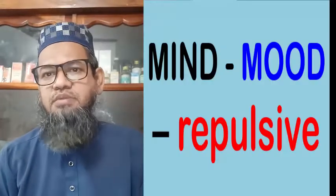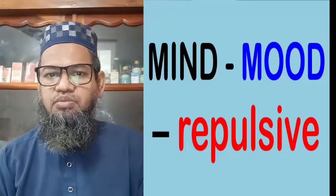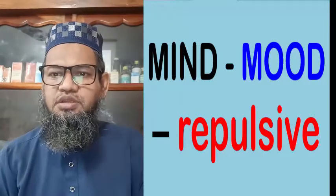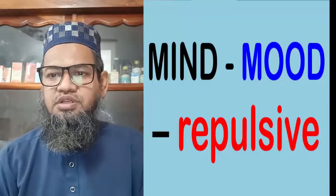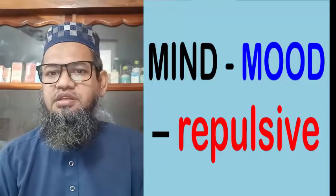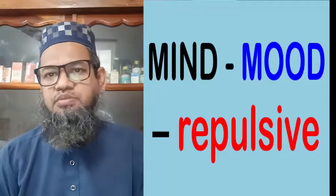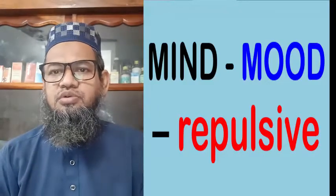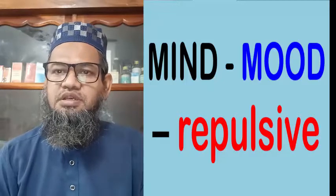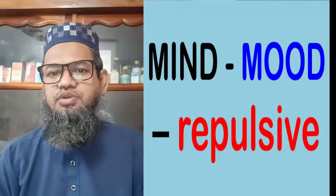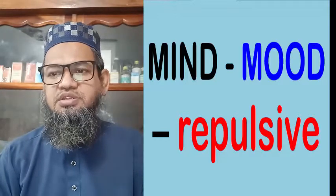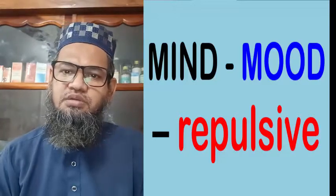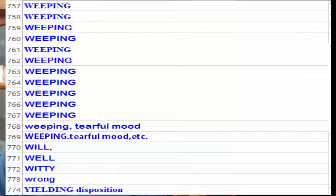Viewers, remember the rubric 'Mood Repulsive.' That is why we have to read the rubric again and again to commit it to memory. We must write rubrics in a book or alphabetically in a Microsoft Word file on a computer, which is the easiest way to master rubrics. For example, my computer has 774 rubrics stored in Microsoft Word.